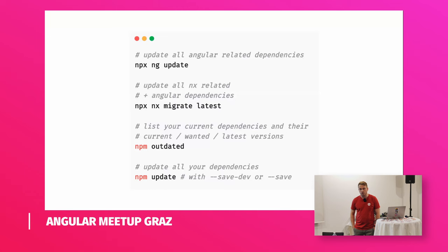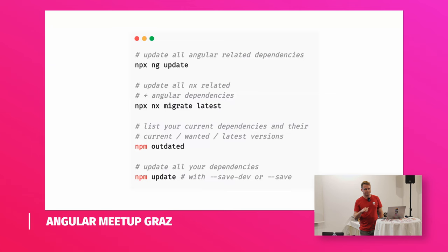That gives you and the maintainers of third-party libraries about one to one and a half years to upgrade timely. So how can you keep your project dependencies up to date? There are various ways, and in this case we are considering the Node Package Manager as an example — just keep in mind that other package managers like PNPM or Yarn most probably have similar tools. If you want to focus on updating your Angular dependencies, you can use the Angular CLI and ng update.